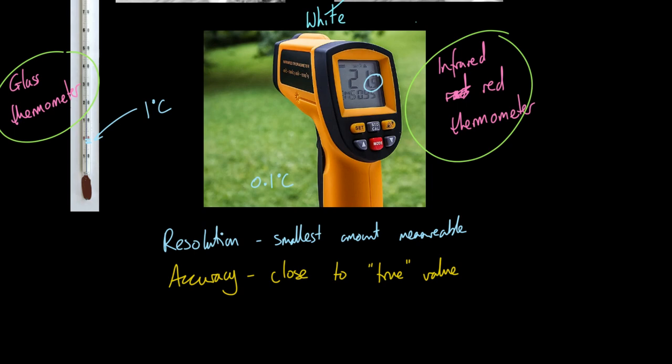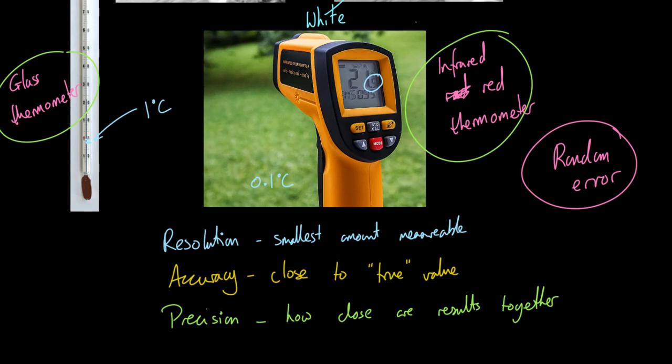That in turn, the fact that you don't have a human being squinting at a little line of alcohol or mercury inside a thermometer helps to mean that your precision has gone up as well. So this is how close the results are together. By eliminating human beings, you are getting rid of or at least reducing random error. And if you are reducing random error because you don't have a person misreading it, then your results will be more precise and close together.